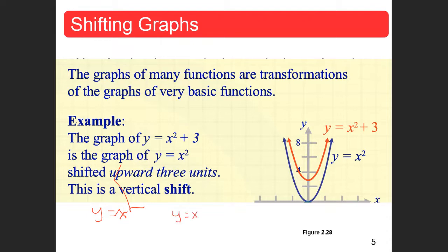If I have y equals x squared plus one, that number tells me I'm shifting the graph up one unit. If I have y equals x squared minus two, that tells me I'm shifting the graph down two units. This is where the Desmos calculator comes in really great — you can take a look at it and just start shifting these graphs up and down. I'm going to pull up the Desmos calculator.